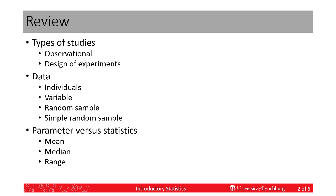Next we talked about some vocabulary that deals with data. The first word is individuals — these are the members of the population of interest, or the population that we are studying. A variable is a quantity that changes; it doesn't stay the same. It varies, and these are usually the things that we're going to measure on the individuals — so it could be height, weight, length, temperature, etc.